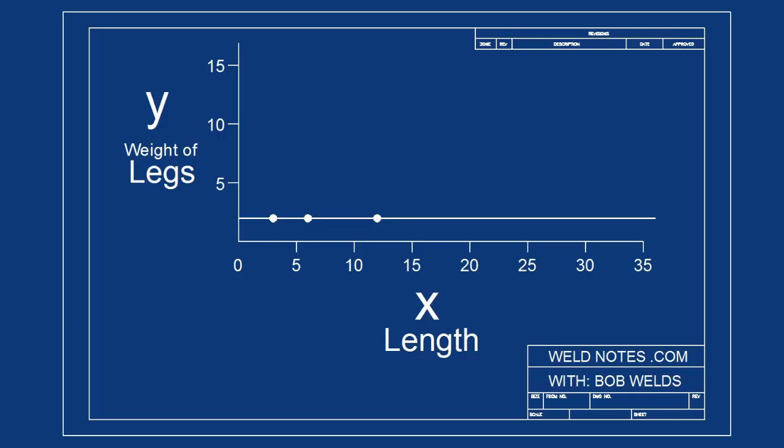We say that the weight of the legs is a constant because it doesn't change no matter how the variable x changes. The graph of this is just a horizontal line.